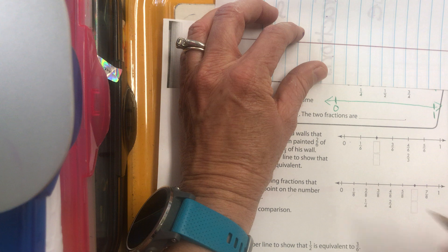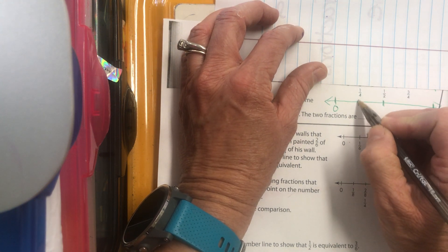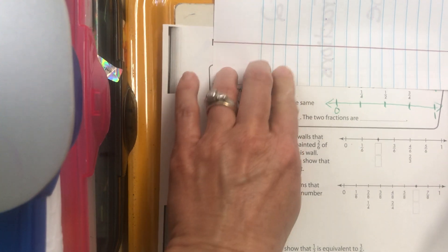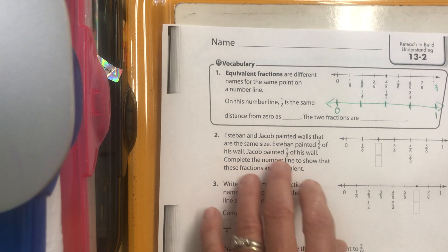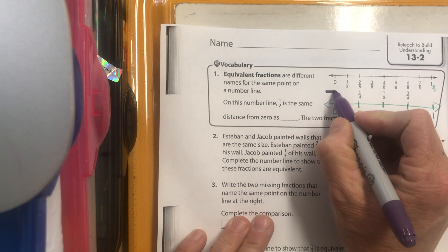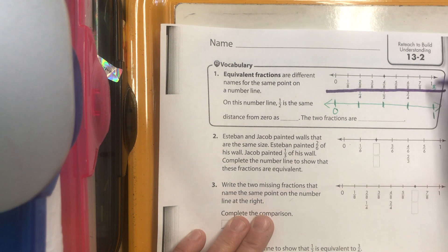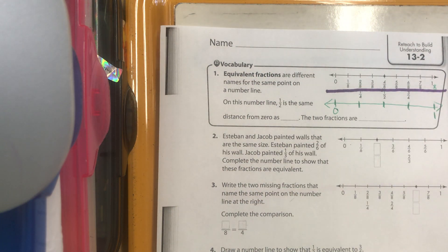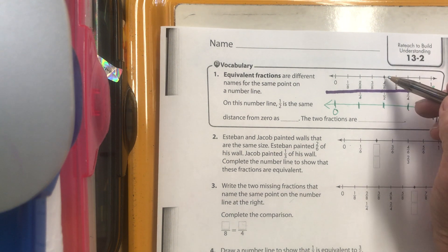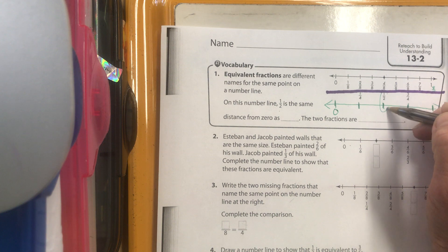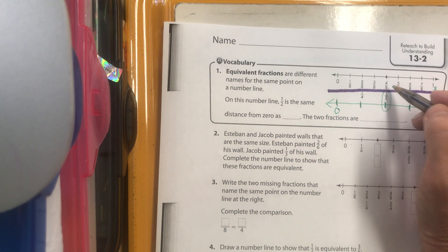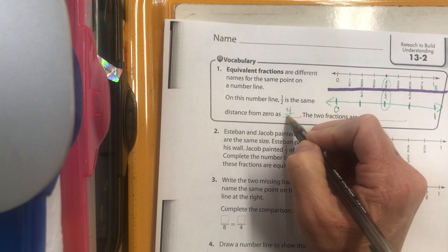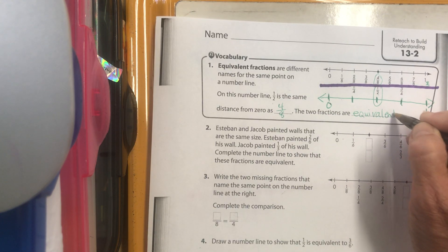The second number line needs to be divided into fourths: one-fourth, two-fourths, three-fourths. They're two separate number lines — it's nice to draw a dividing line in between, so you have one number line above and a separate one below. On this number line, one-half is the same distance from zero as four-eighths is on the other number line, so those are equivalent fractions.